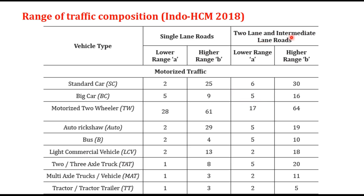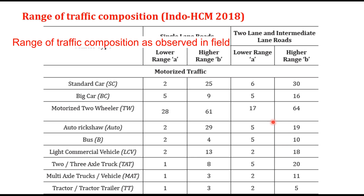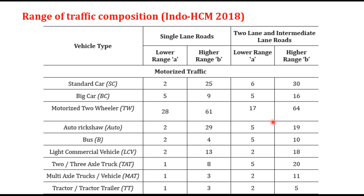The PCU factors were evaluated for a specific traffic composition. For a two-lane or intermediate-lane road, for example, the standard car is 6 to 30 percent, big car 5 to 16 percent, motorized two-wheelers 17 to 64 percent, and so on. The PCU factors in the Indian Highway Capacity Manual are valid for this traffic composition, and the manual also provides a procedure for determining PCU for any other traffic composition.